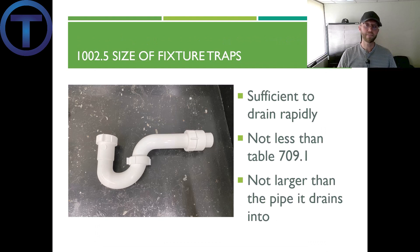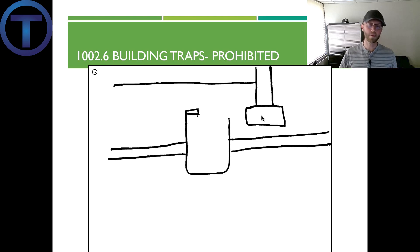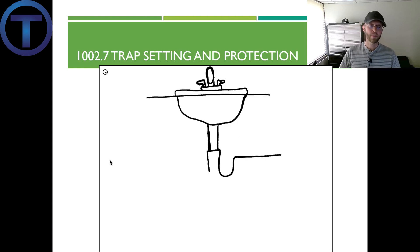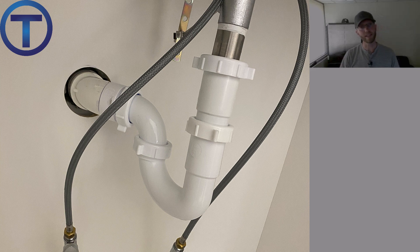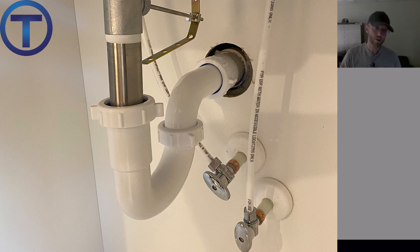Section 1002.5 talks about the size of fixture traps. That trap has to be sufficiently sized to drain rapidly — not less than the table in Section 709.1, which gives us drain sizing information — and the trap cannot be larger than the pipe that it drains into. We never reduce a drain size in the direction of flow. Section 1002.6 goes over building traps, which are basically prohibited — you don't want to be trapping all the waste from the whole building. Section 1002.7 specifies that we should set the trap level and make sure it's protected. Level meaning if you're doing slip joint and fitting those together, you can kind of fudge the angles, but you should be using proper fittings and creating a nice level trap seal so that it works as it should.